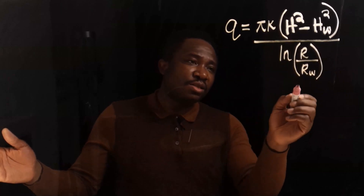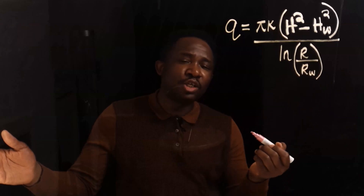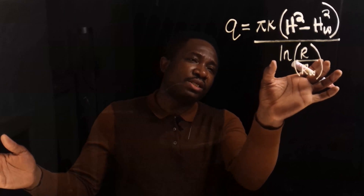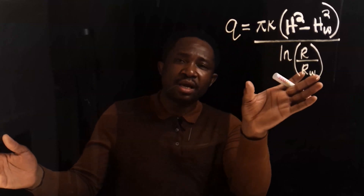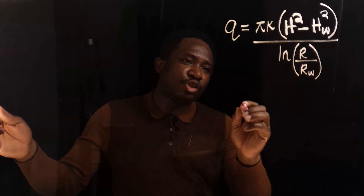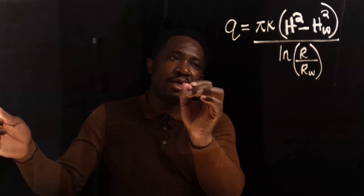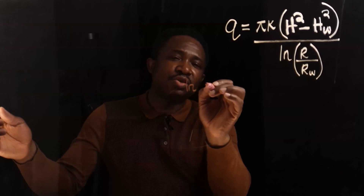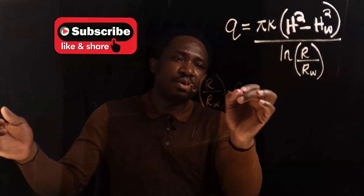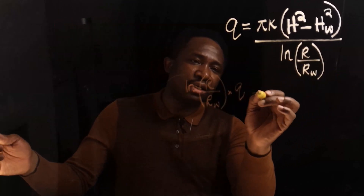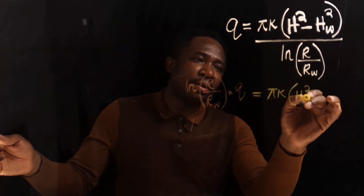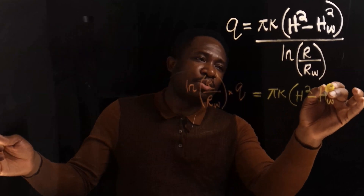In this equation, let's make R subscript W the subject. The first thing we're going to do is move the denominator to the other side by cross-multiplication. The natural log of R divide R subscript W will move to the other side and multiply Q. We're going to have that the natural log of R divide R subscript W multiplies Q on this side, and on the other side, pi K multiplies H squared minus H subscript W squared.